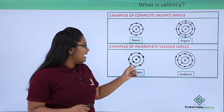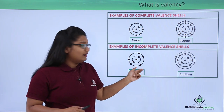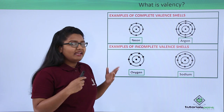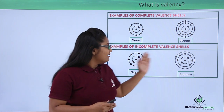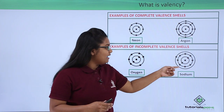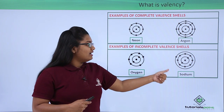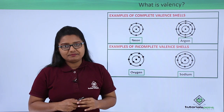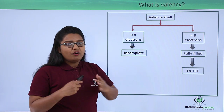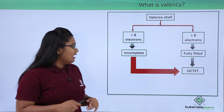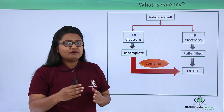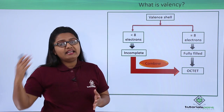An oxygen atom has only six electrons in its outermost shell, so we say that it is incomplete or not fully filled. Same applies to sodium, which has only one electron in its outermost shell — that is M shell. So both these atoms are said to have incomplete valence shells. Now these atoms which have incomplete valence shells always try to acquire an octet configuration, and for that they usually combine with other atoms — of the same element or of another element.